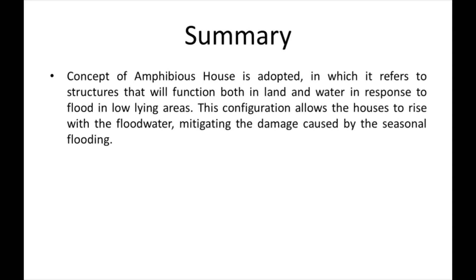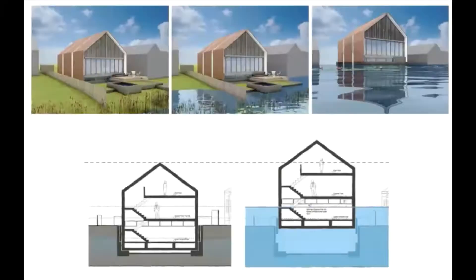The common way to achieve a floating concept is to make a hull and build a lightweight house on top of it. This concept is used in all houseboats, where a steel or timber hull is used as a base to build a house.